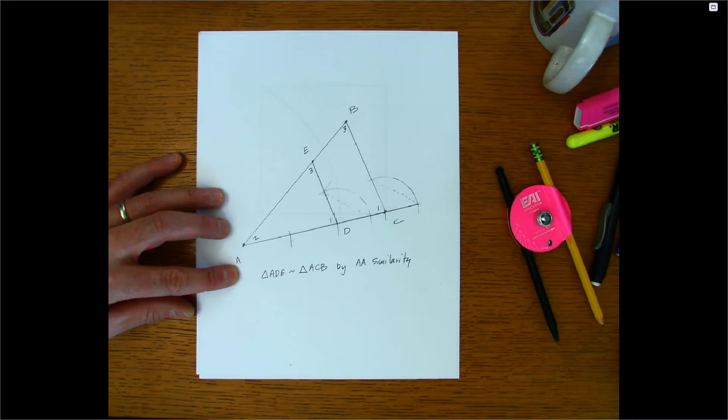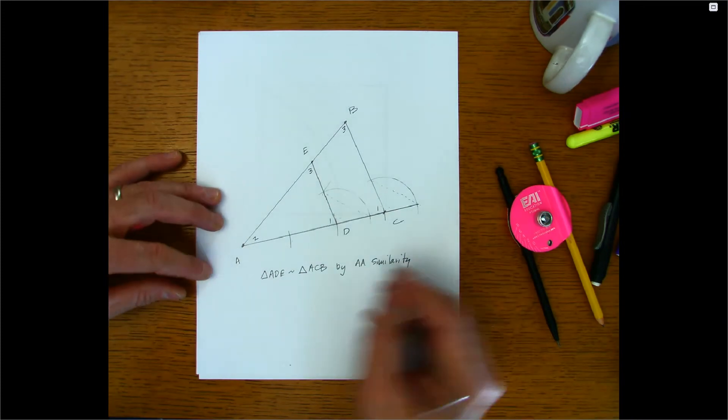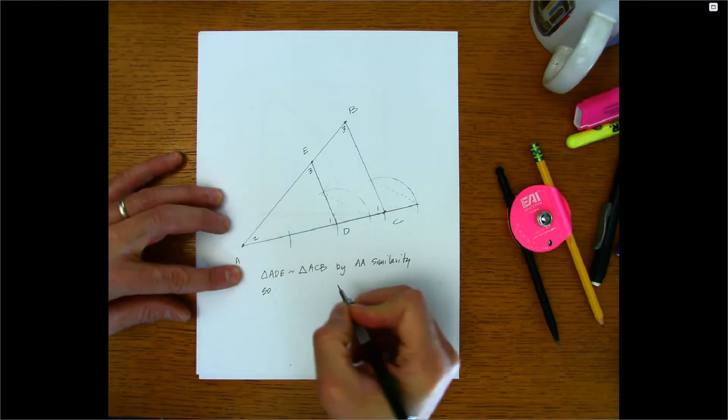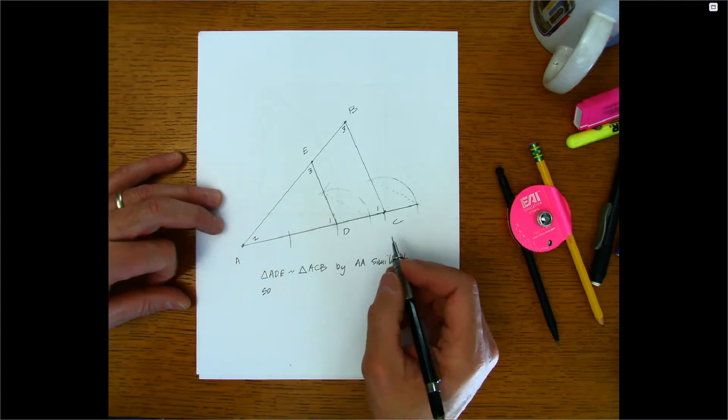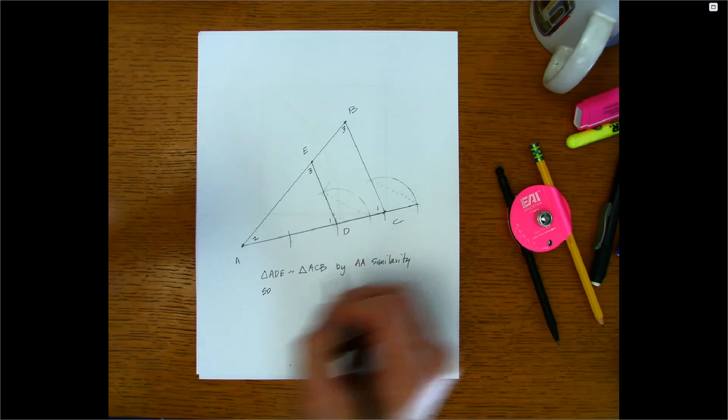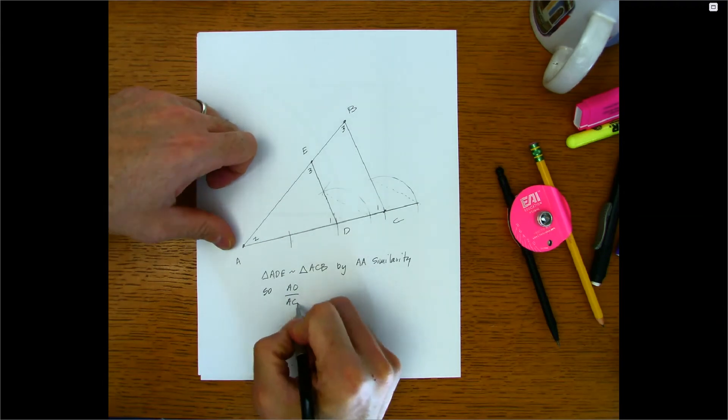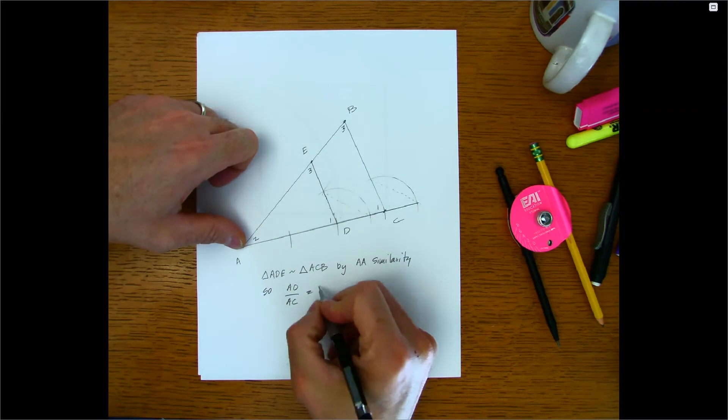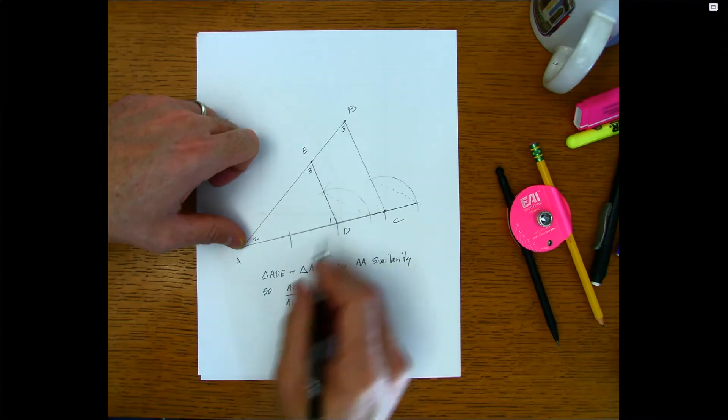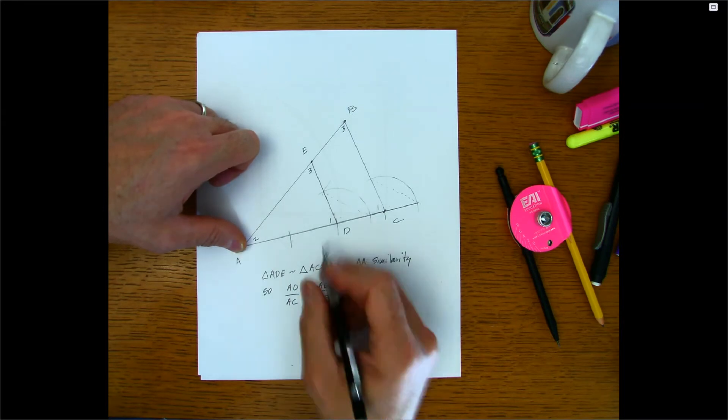And if that's the case, then sides are in proportion. So let's see, AD is to AC, so this is to that as AE is to AB. But we know that AD is to AC as 2 is to 3, right?